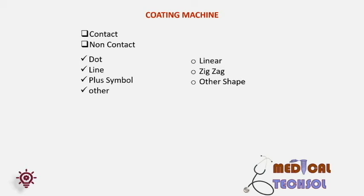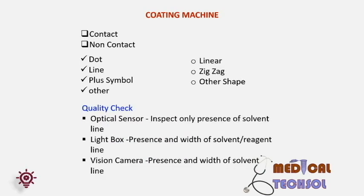Quality checks done for automated and manual coating machines are: first, an optical sensor — inspects only the presence of solvent; second, a light box — checks presence and width of the solvent reagent lines; third, a vision camera — checks presence and width of the solvent lines. Once membranes are dried, it is not possible to check the quality of the line.